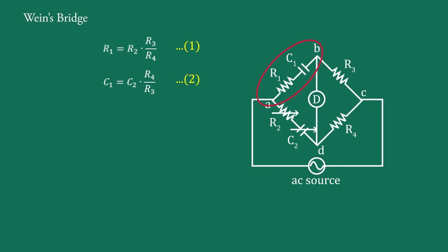Now we will find the parameters of the bridge. In this arm of the bridge, capacitance C1 and resistance R1 are in series. The parameters of RC series connections are explained in previous videos, so we will use those formulas to derive the parameters for this bridge. First, the impedance angle θ: by applying the general formula for RC series connections, we can write tan θ = 1/(ωC1·R1).